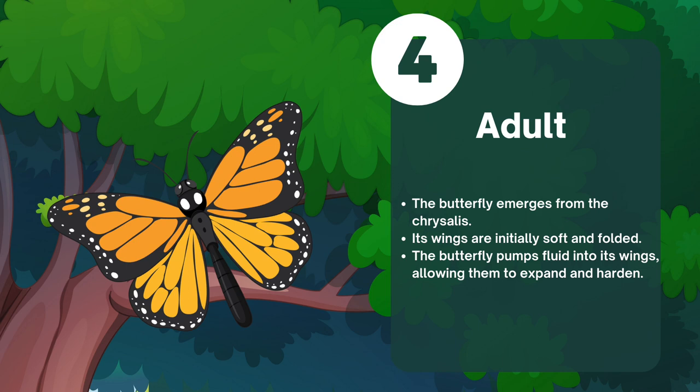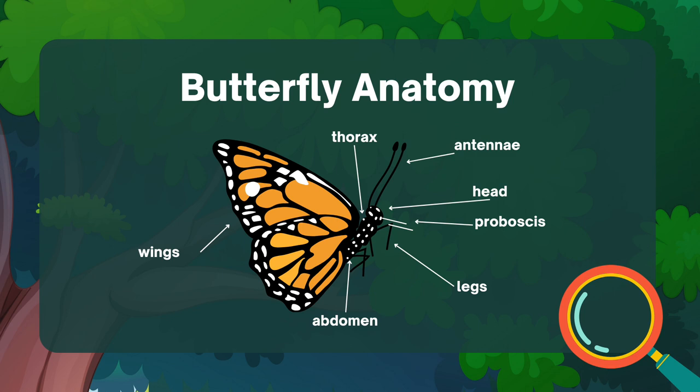Let's take a quick look at the anatomy of a butterfly. A butterfly has a thorax, wings, antennae, head, proboscis, legs, and abdomen. Each part plays a crucial role in the butterfly's survival and functions.